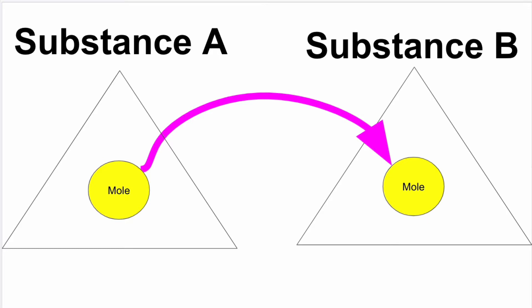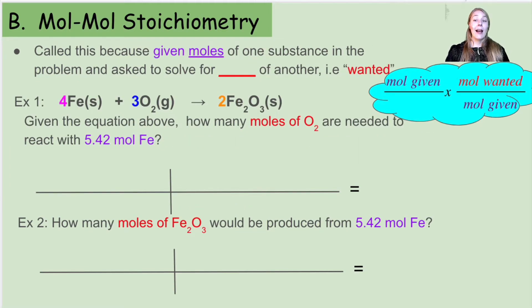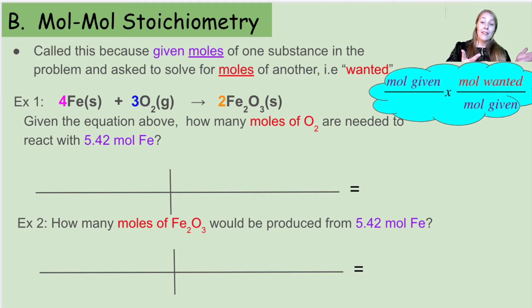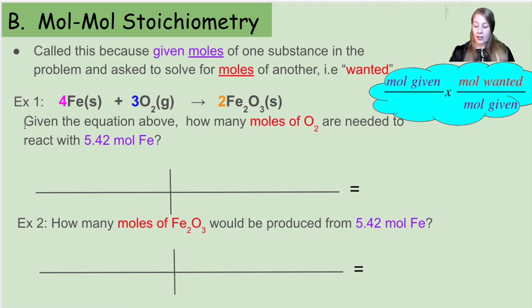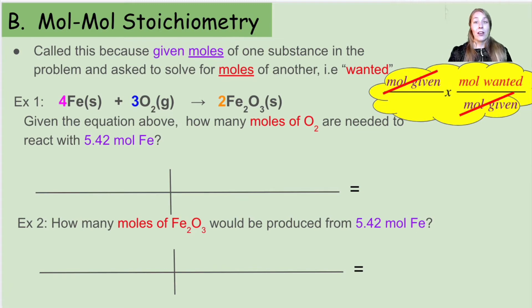For mole-to-mole stoichiometry, we are given the moles of one substance and asked to solve for the moles of another — so we're given moles and we want moles. We're going to use the same equation throughout this lecture. We place moles of the given in the top left, and moles of the given on the bottom of the conversion factor. Because those units cancel, we're left with moles of the wanted. We're just converting between two substances instead of one.